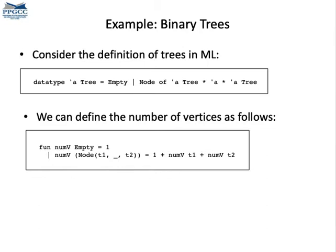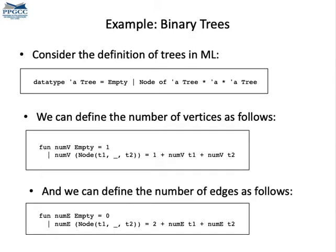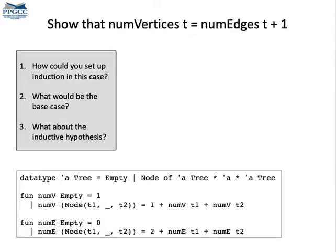We can count the number of vertices in a tree using the predicate numV. An empty tree has one vertex. And the number of vertices in a non-empty tree equals the number of vertices in each subtree plus one. And here is a function to count the number of edges in a tree. An empty tree has no edges, and a non-empty tree has two edges plus the number of edges in each subtree. Can you show that the number of vertices in a tree is equal to the number of edges plus one? Below, you find all the definitions that are necessary to carry out this proof.